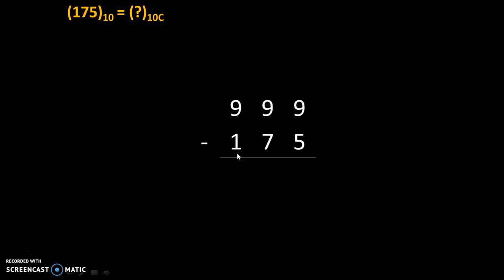999 minus 175 will give us 9 minus 5 equals 4, 9 minus 7 equals 2, and 9 minus 1 equals 8. So this 824 is called the 9's complement of 175.